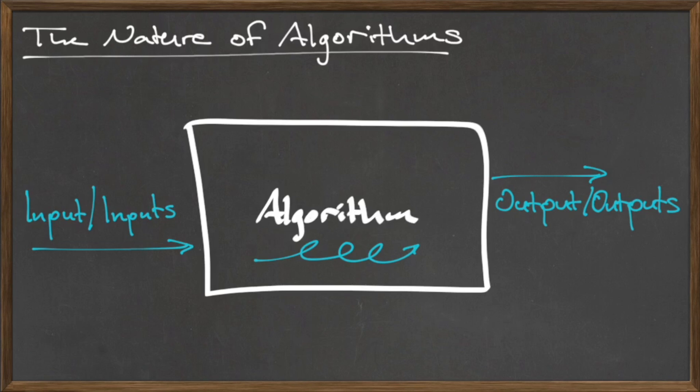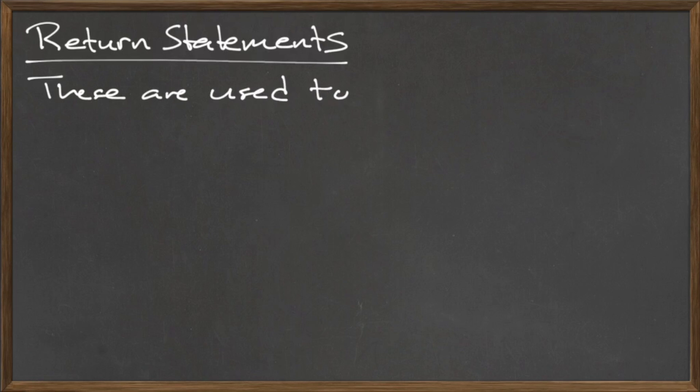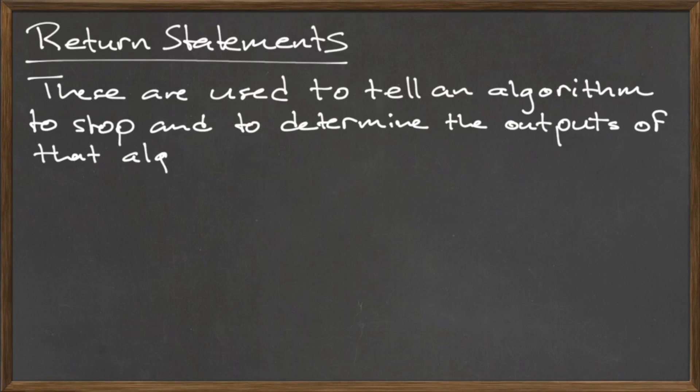As we mentioned previously, an algorithm runs in a finite number of steps. It wouldn't be very practical to have an algorithm that never terminated. In order to control when an algorithm stops, and what the outputs of that algorithm are, we use return statements.